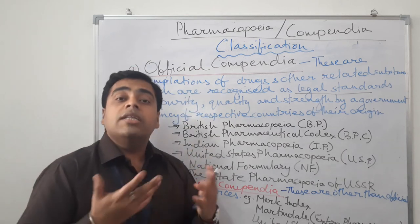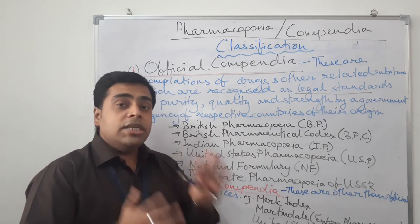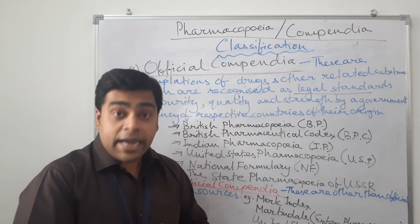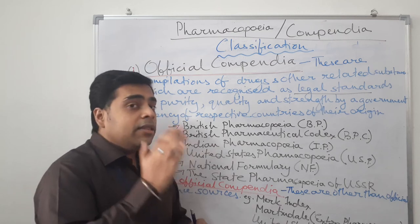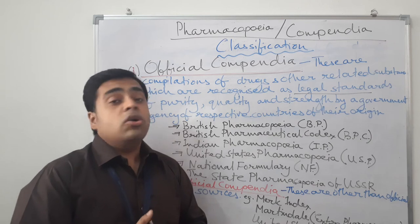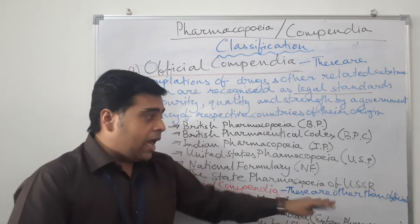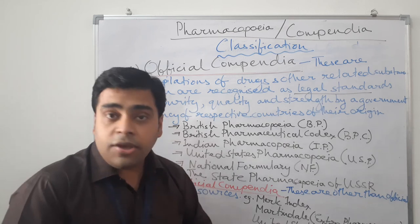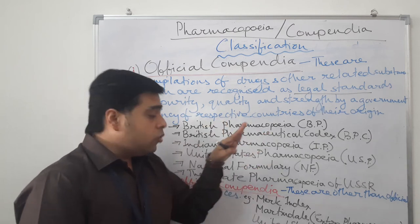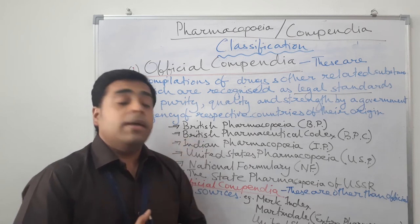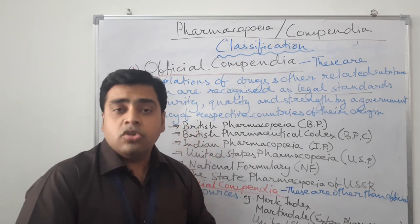Now, non-official compendias — what are these? These are other than official reference sources. They are not exactly official sources, but yet very vital ones. They are a very rich source of information, but they are not published from government agencies; hence we cannot call them legal standards provided by government agencies. They are other than official reference sources, widely used. These non-official books — they are less important as official standards, but they are very informative. For example, Merck Index — very important — the Martindale or the Extra Pharmacopoeia — an excellent source of information.